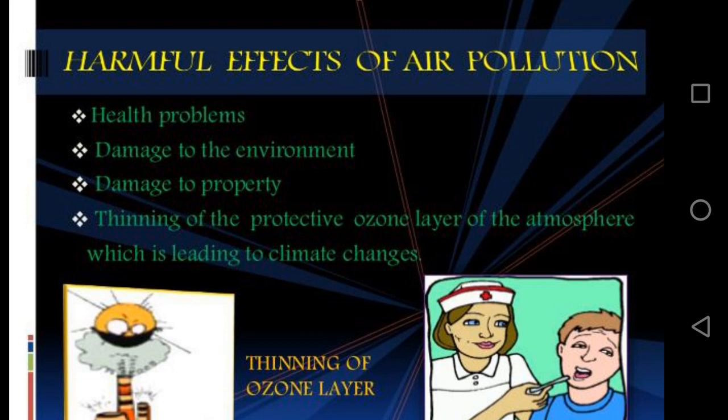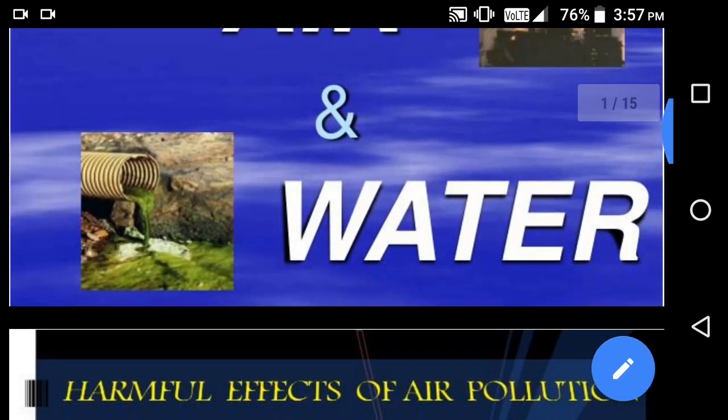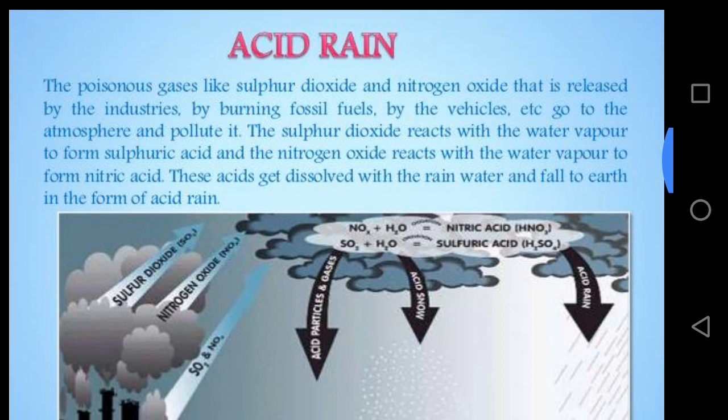First, I will explain acid rain. Burning of fossil fuels — coal and petroleum — releases oxides of sulfur and nitrogen into the air. When these oxides mix with water vapour present in the air, they form sulfuric acid and nitric acid. These acids mix with rain water to form acid rain. So we define acid rain as the presence of sulfuric acid and nitric acid in rain.